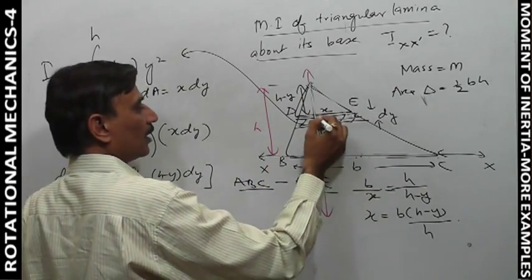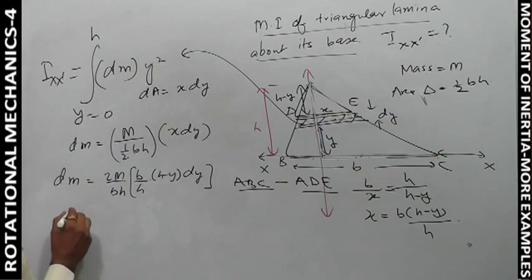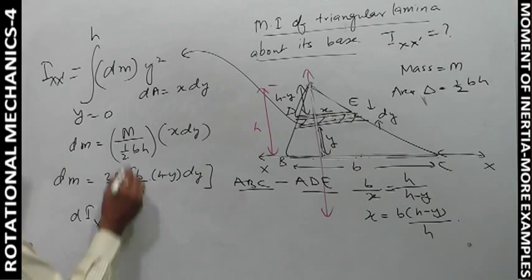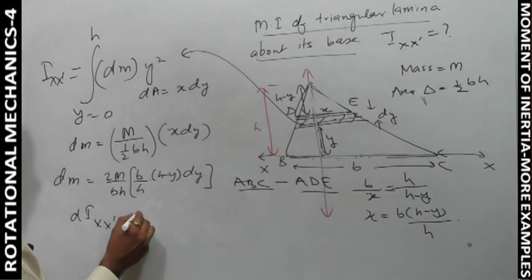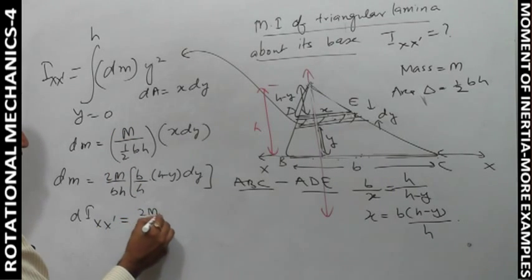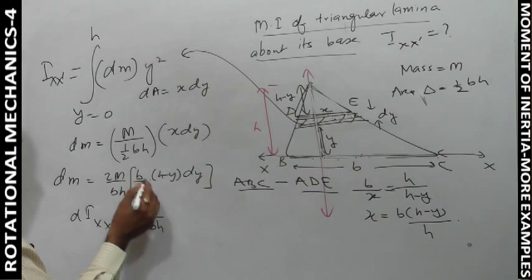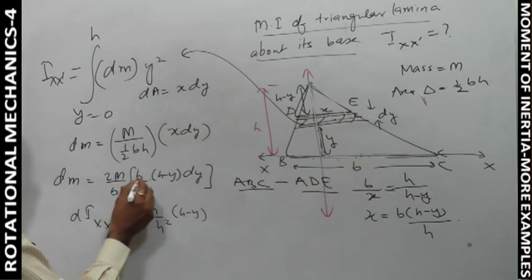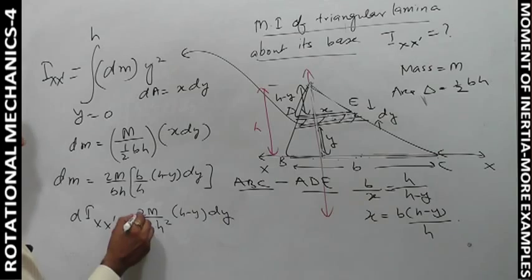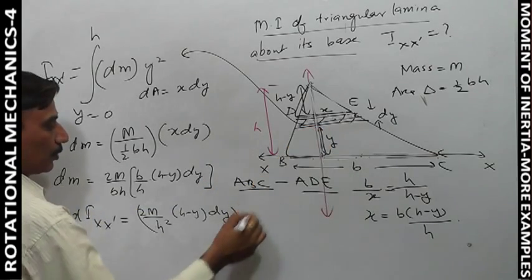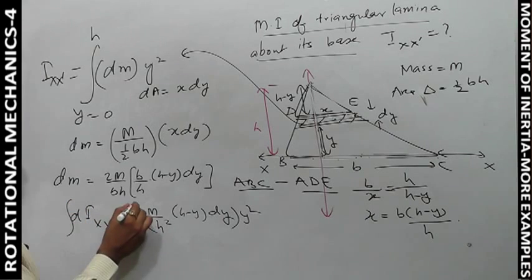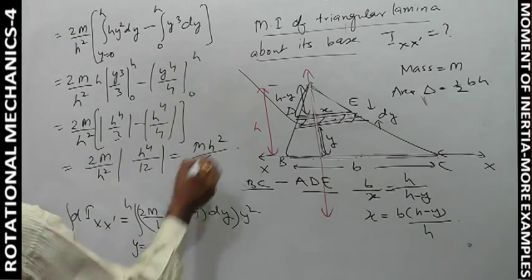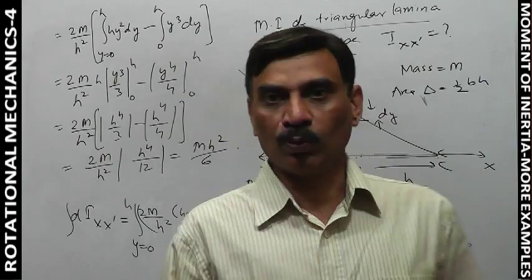Now the moment of inertia I_xx dash equals integral of dm·y². Substituting dm: (2m/h²)∫(h-y)y²dy from 0 to h. Solving this integral gives mh²/6, which is the answer.